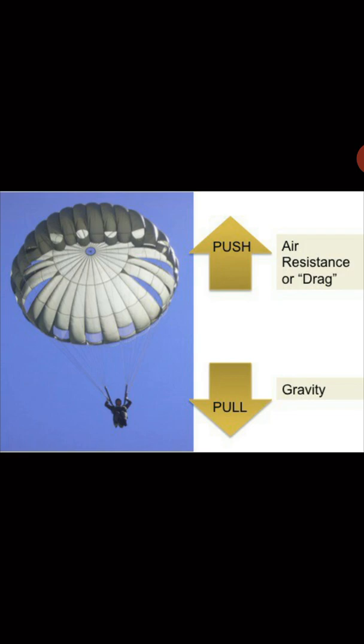Air resistance is the force which opposes the direction of movement. The movement of the parachute is downwards, so air resistance will be opposite — that is, upwards. If the object is moving towards the left, air resistance will be towards the right. If moving towards the right, air resistance will be towards the left. If moving downwards, air resistance will be upwards. Another name for air resistance is drag — it's also called the drag force.